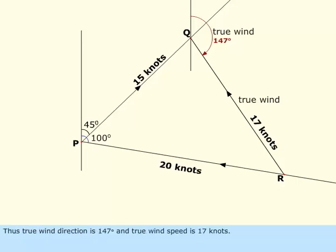Thus, true wind direction is 147 degrees and true wind speed is 17 knots.